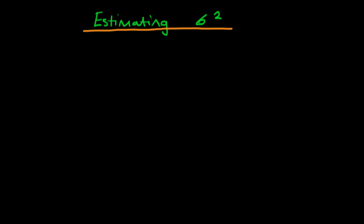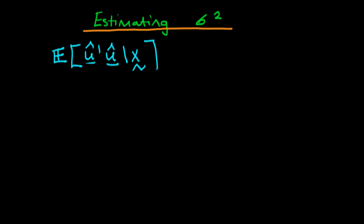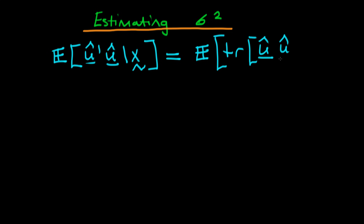In this video, we're going to start off in a direction which is going to lead us to an unbiased estimator for sigma squared. In the last video, we considered the expectation of û' times û, given that we had our matrix of independent variables x. What we're going to do in this video is demonstrate that this is exactly the same as taking the expectation of the trace of û times û', given that we have x.